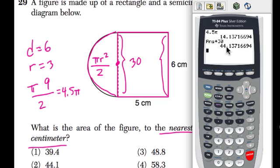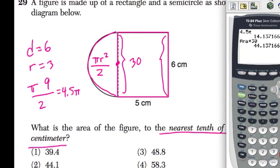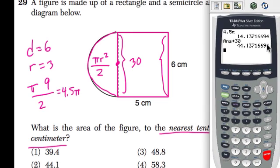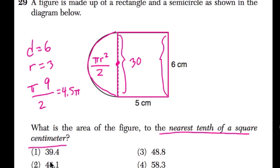Now we have 44.137, 16694. Now they want us to round to the nearest tenth, which is this 1 right here. The 3 will not round up your 1 at all. So we pick 44.1, choice 2. It's the only answer that's close. All right, hope that helped.